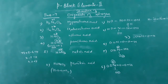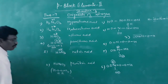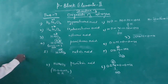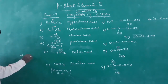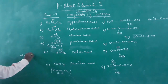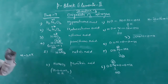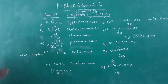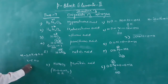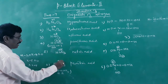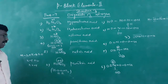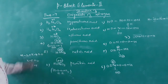For pernitric acid HOONO2: the two peroxide oxygen atoms each get −1, and the two terminal oxygens get −2. So: H(+1) + 2O(−1) + N(x) + 2O(−2) = 0, giving x + 1 − 2 − 4 = 0, x = +5. So in both nitric acid and pernitric acid the oxidation state of nitrogen is +5, and in both nitrous acid and pernitrous acid it is +3.